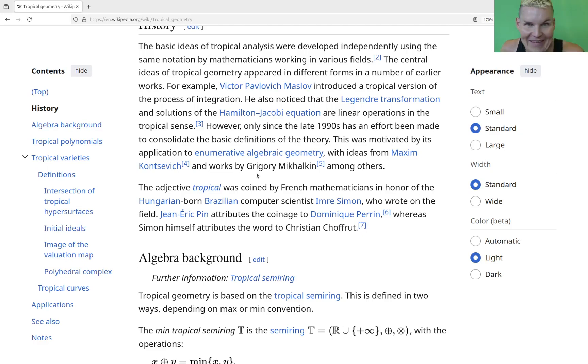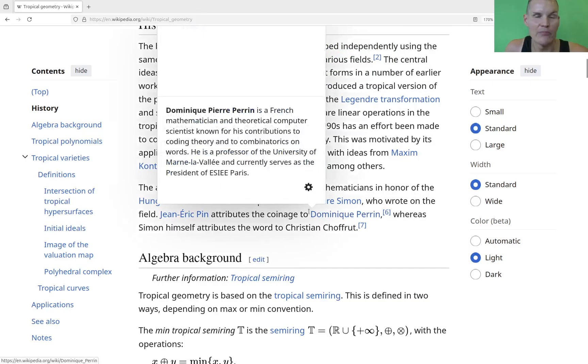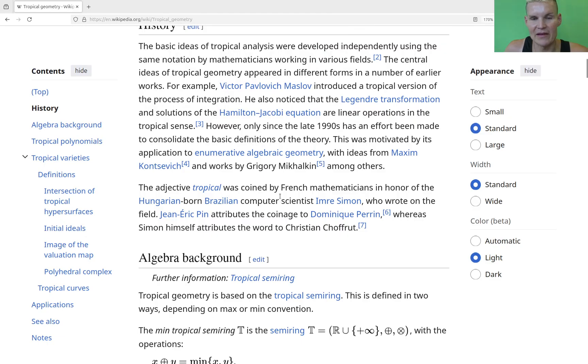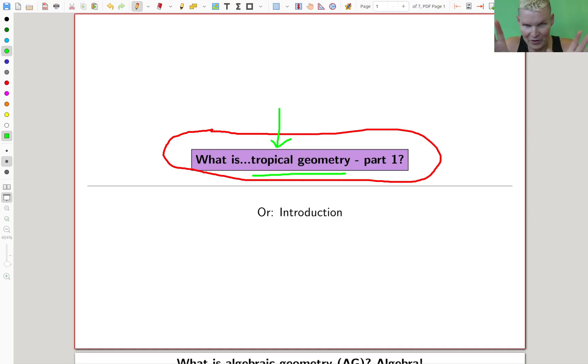Turns out that the word tropical essentially means nothing, so it's just a really good name. The history of the subject is a little bit explained on the Wikipedia page, and essentially the adjective tropical, which makes the whole thing so beautiful.